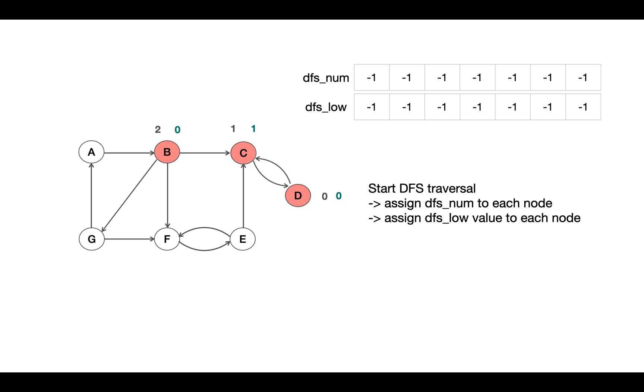As that's the minimum DFS number vertex reachable from this node. Same for G, DFS_low value will be 0 for G as well because the node D is reachable from node G. But these nodes won't make any strongly connected component because node B and G are not reachable from the node C.